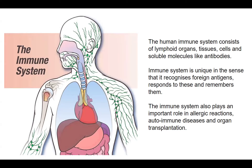When talking about autoimmune diseases, we need to revisit our immune system. The human immune system consists of lymphoid organs, tissues, cells, and soluble molecules like antibodies. It is unique in that it recognizes foreign antigens, responds to them, and remembers them. On a second encounter with the same enemy, the response is very fast. The immune system also plays an important role in allergic reactions, autoimmune diseases, and organ transplantation.